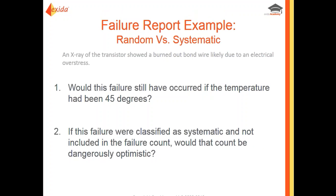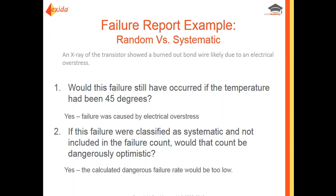The big clue was: an x-ray of the transistor showed a burned-out bond wire likely due to electrical overstress. The first question to ask is: would this failure still have occurred if the temperature was 45 degrees instead of 55 that day? Well, yes — the failure was caused by electrical overstress. So if this failure were classified as systematic and excluded from the failure count, the calculated dangerous failure rate would be too low.